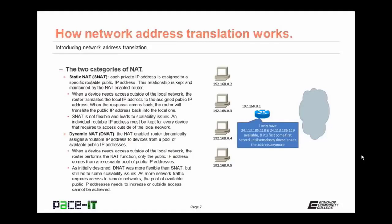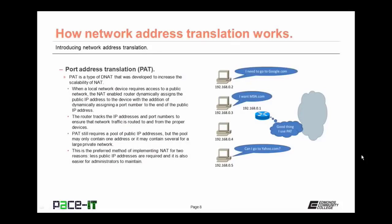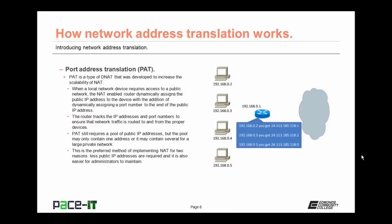Thankfully, there is a solution called Port Address Translation, or in Cisco terms, NAT with PAT. PAT is a type of Dynamic NAT developed to increase the scalability of Network Address Translation. When a local network device requires access to a public network, the NAT-enabled router dynamically assigns the public IP address to the device with the addition of dynamically assigning a port number to the end of the public IP address. The router tracks the IP addresses and port numbers to ensure that network traffic is routed to and from the proper devices. PAT still requires a pool of public IP addresses, but the pool may only contain one public IP address, or several for a large private network. This is the preferred method of implementing NAT — it requires fewer public IP addresses and makes it easier for an administrator to maintain.